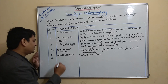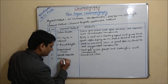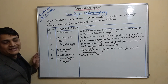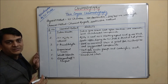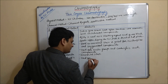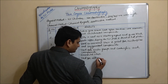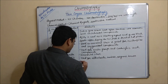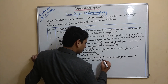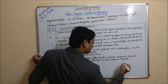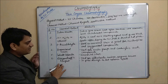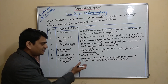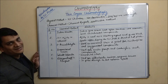Now coming to the sixth one which is Dragendorff reagent. It is used for alkaloids, amines, and organic bases. Dragendorff reagent gives orange to red color spots for alkaloids, amines, and organic bases.